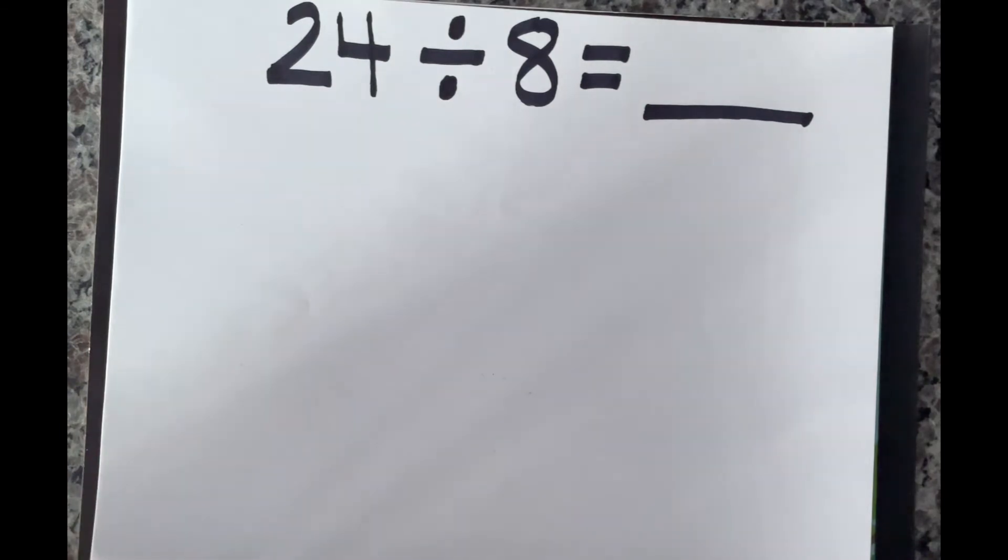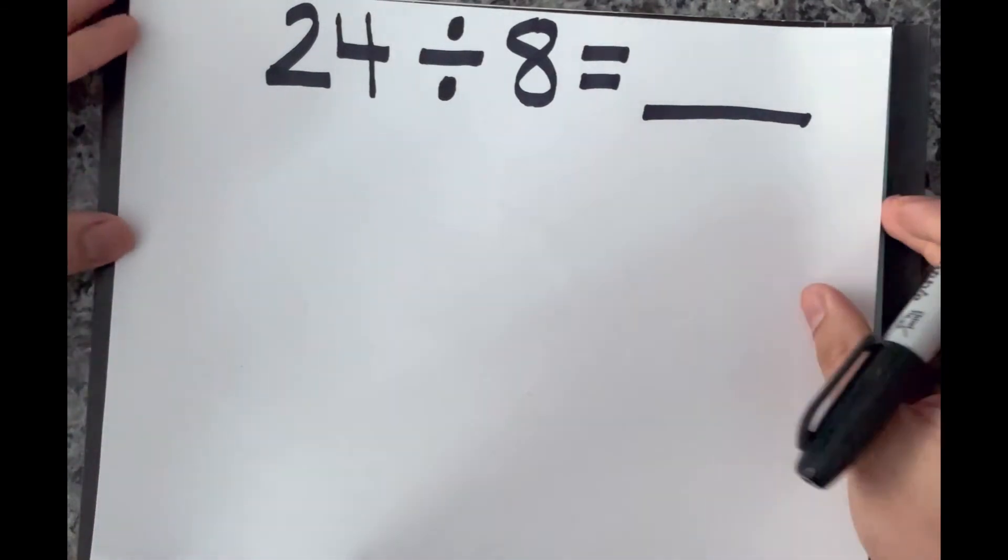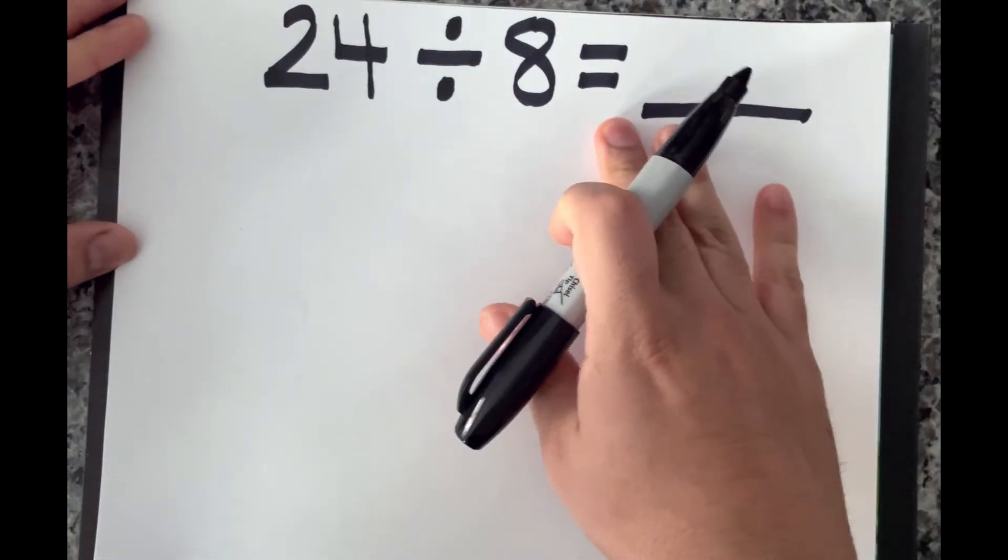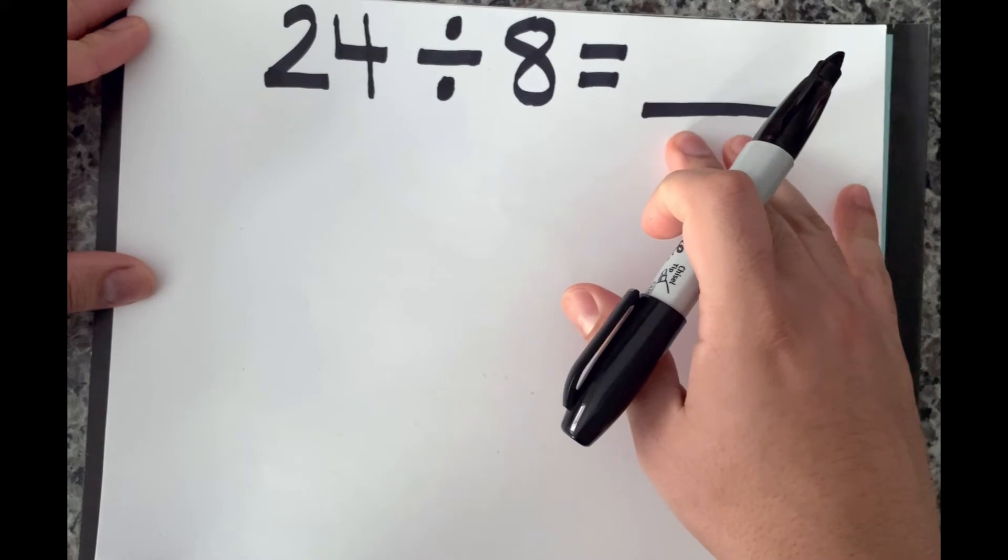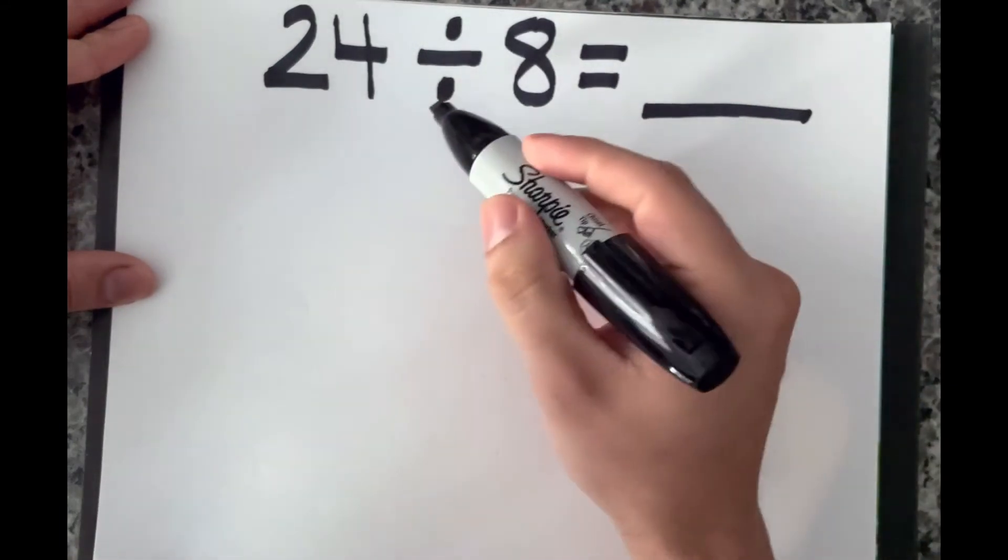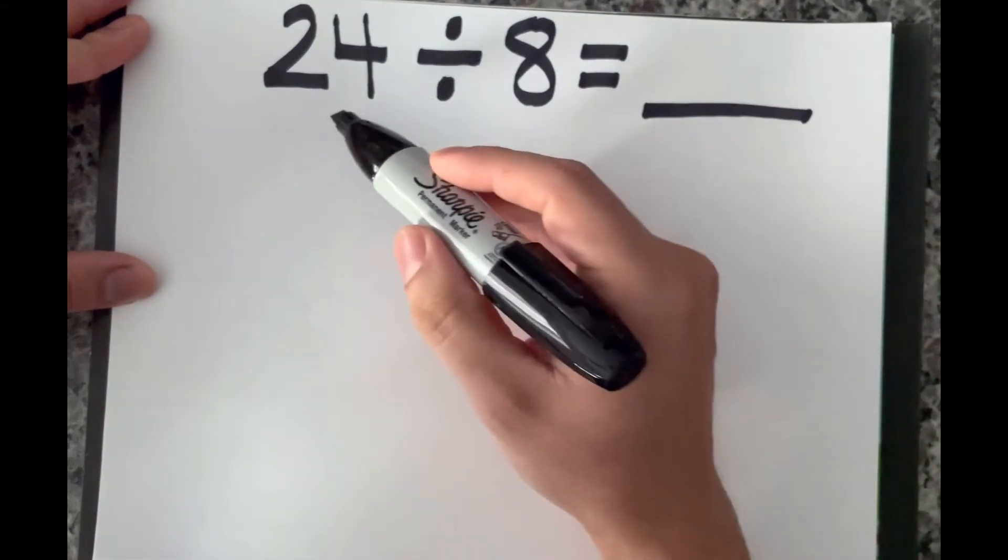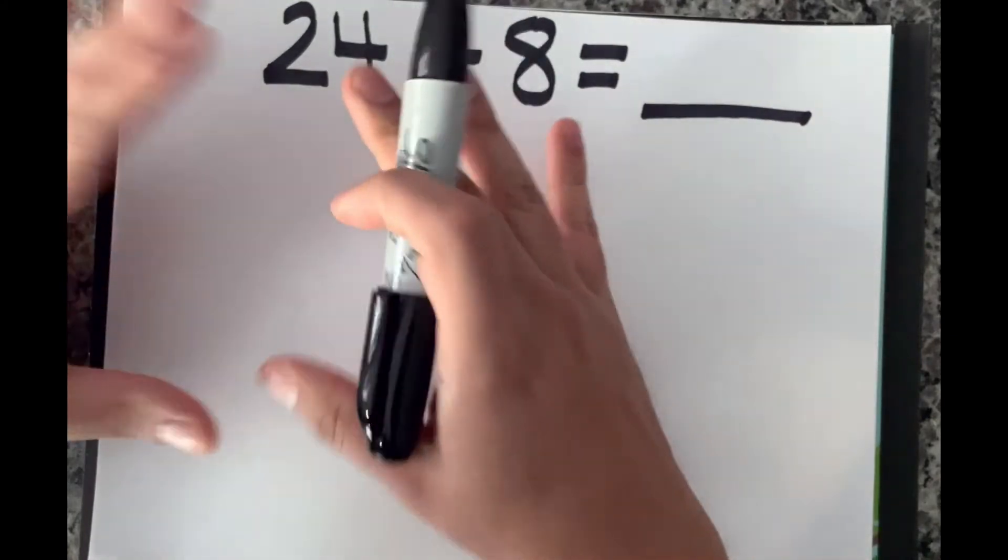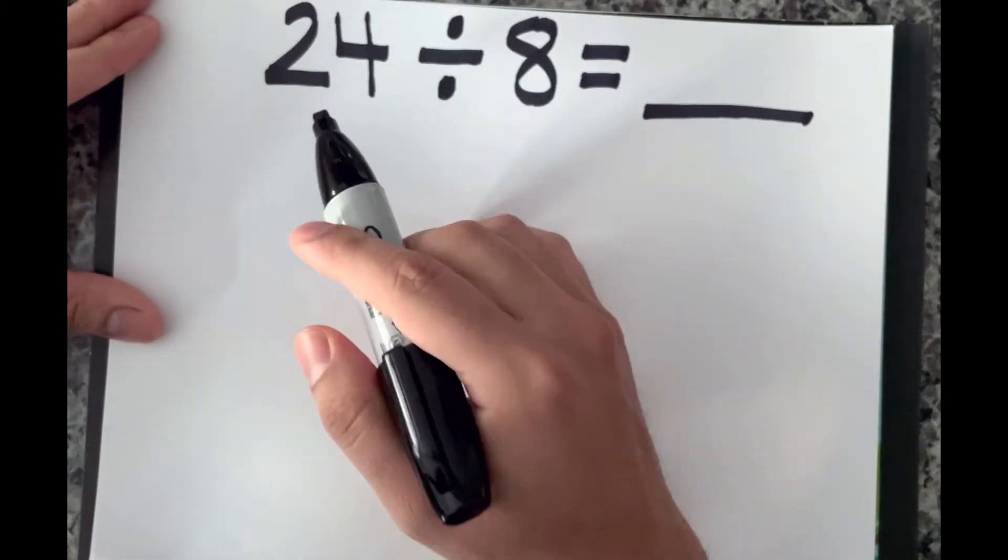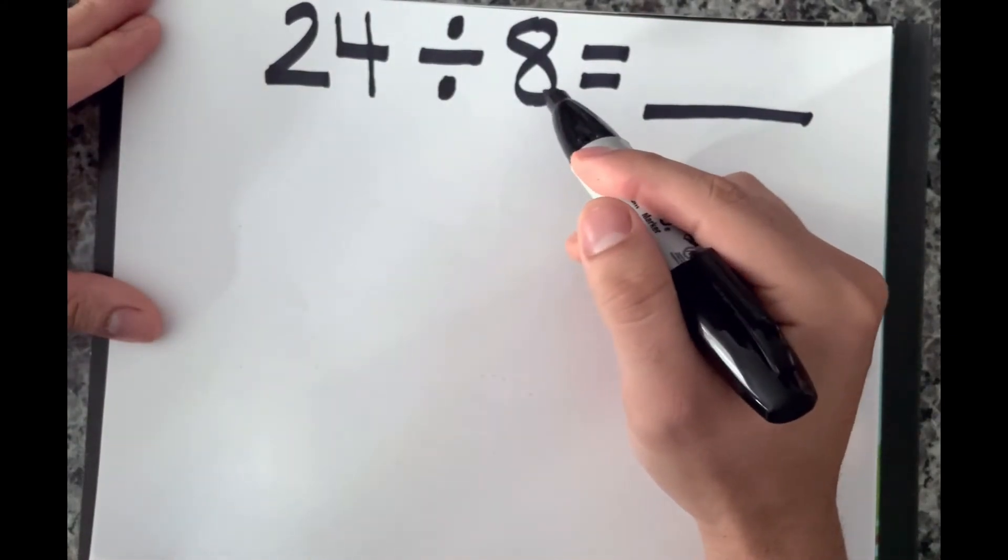How to divide using equal groups. Now the first thing you're going to want to do is you're going to look at your problem, your number sentence here, and it's telling us 24 divided by 8. So it's 24, we have a group of 24 and we need to put it into eight equal groups.